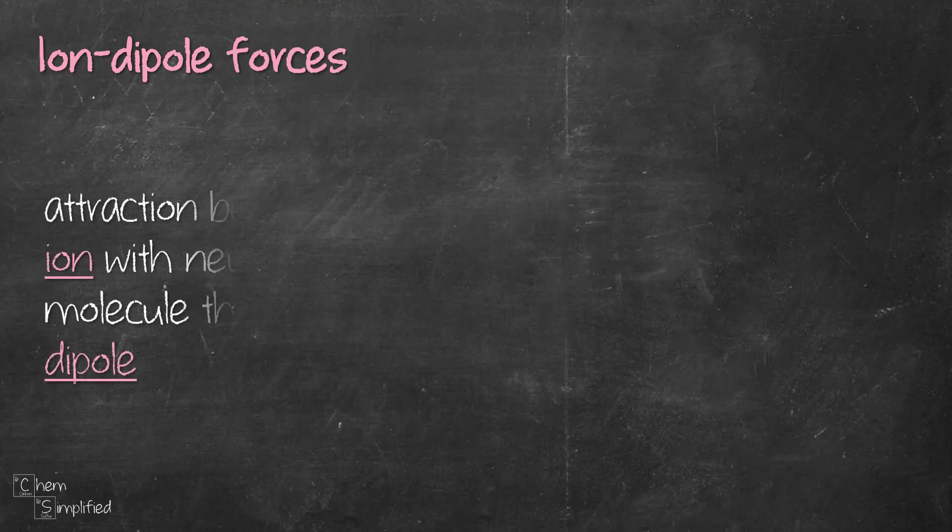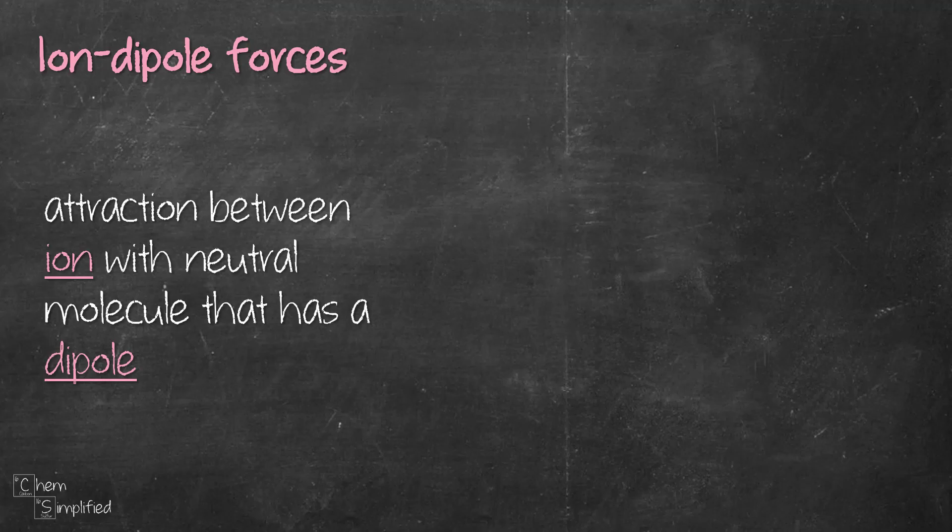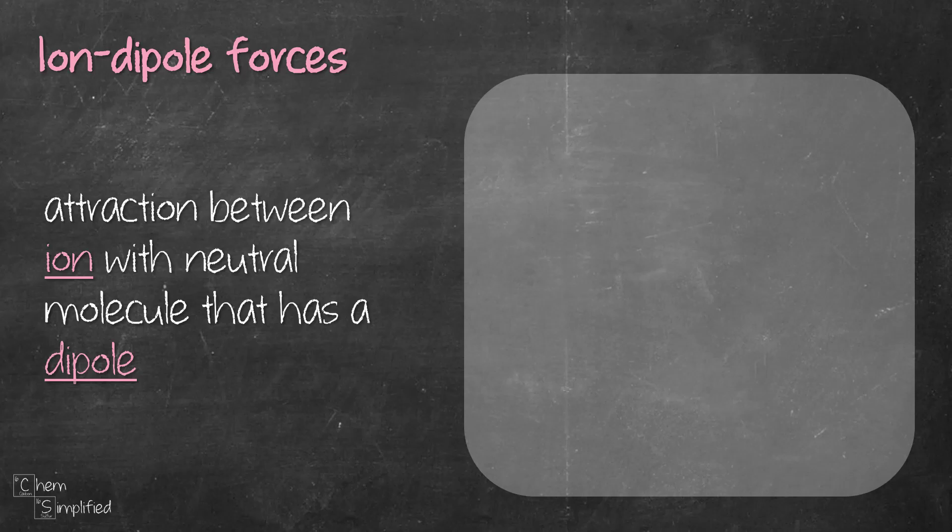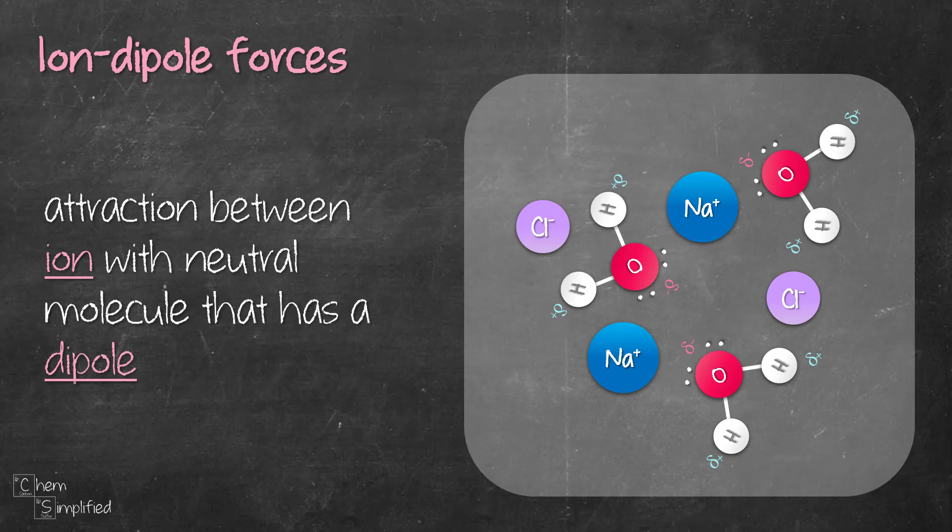Next is ion-dipole forces. It's the attraction between ion, which is charged, with a neutral molecule that is polar, which means it has a dipole. So we take salt for example. It's made out of Na plus and Cl minus ions. When it's added to water, the water molecules are going to surround the ions in a way where the partially negative part of the water is going to be attracted to the Na plus ions. Similarly, the partially positive part of the water molecule, they're going to be attracted to the Cl minus, which is negatively charged.